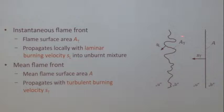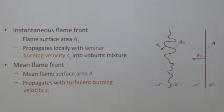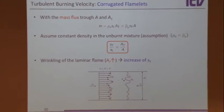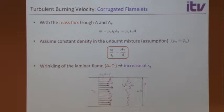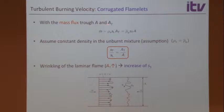We want to model this as a planar flame moving with a turbulent burning velocity S_T. Equating the mass burning rates: A_T times S_L equals A times S_T (assuming equal densities), so S_T/S_L equals A_T/A — the area ratio. That makes perfect sense. Then Damköhler related the area ratio to velocity using the Bunsen flame analogy.